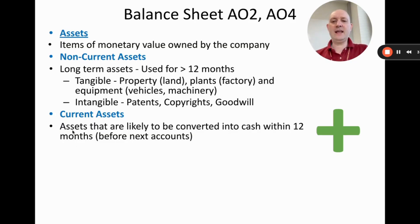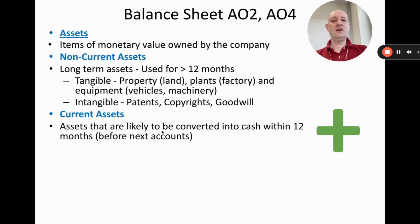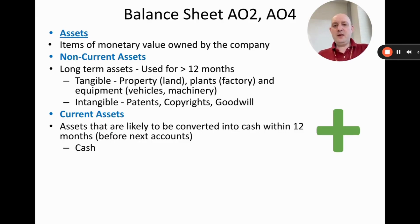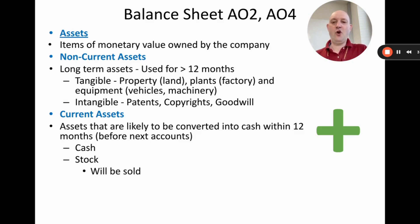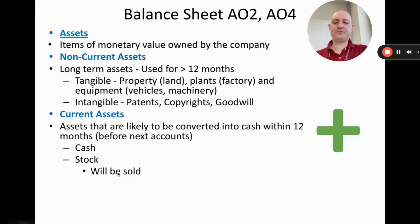Current assets are things the business owns that are likely to be converted into cash within the next 12 months — because that's when the next accounts will be published, and in theory these won't appear on that future balance sheet as they'll have turned into cash. For the IB, we have three current assets: cash, stock (finished or work-in-progress products not yet sold), and debtors. Stock will hopefully be sold and turned into cash before the next balance sheet.